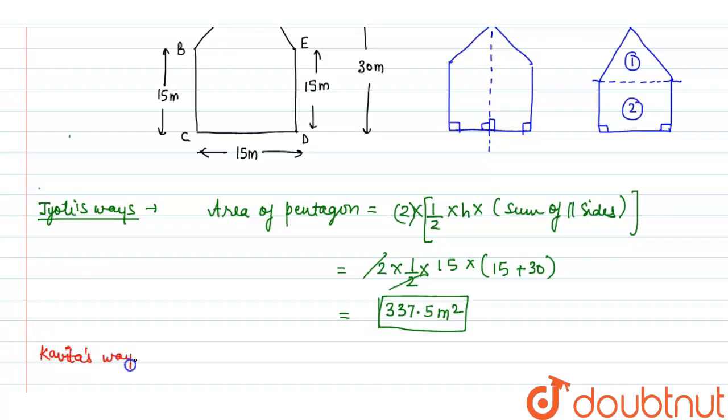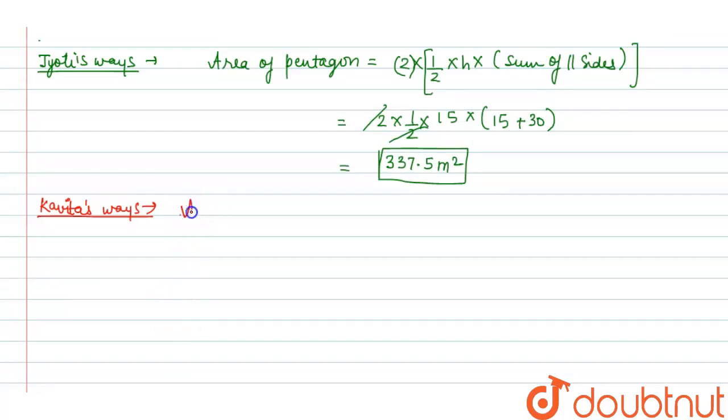Now come to Kavita's method. In Kavita's method, we have to find area by area of triangle plus area of square. So area of pentagon park is equal to area of triangle plus area of square or rectangle. So area of triangle is half of base into height.